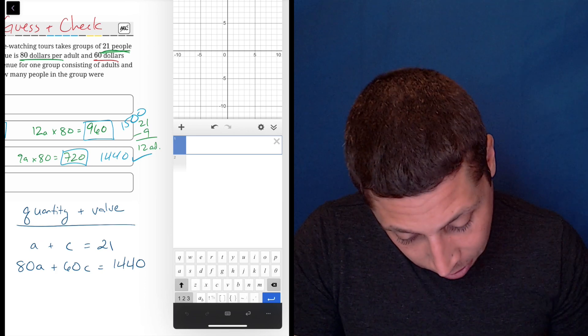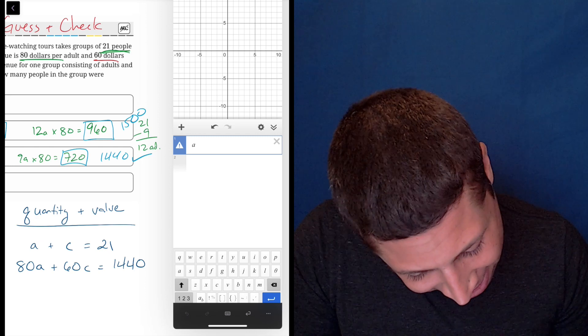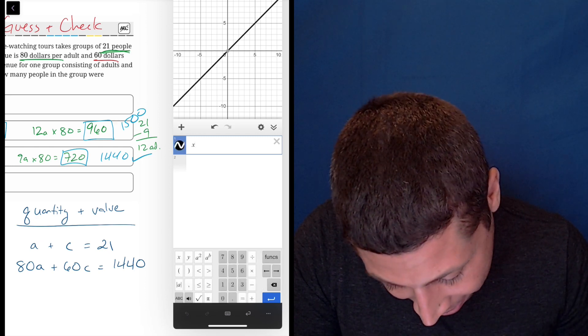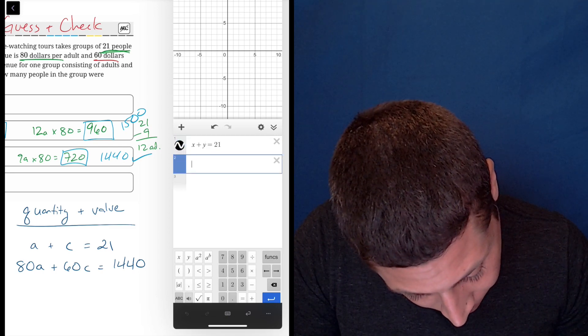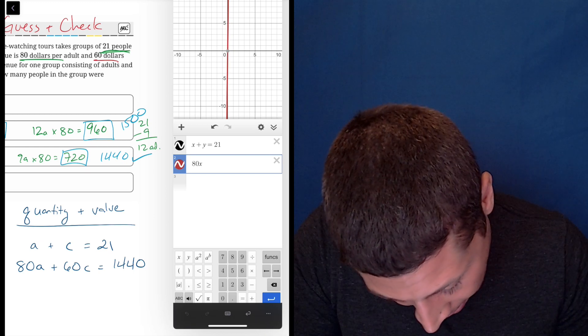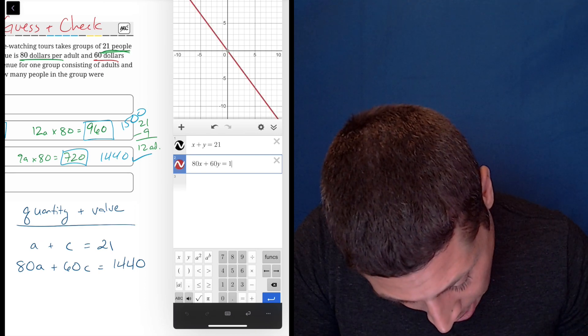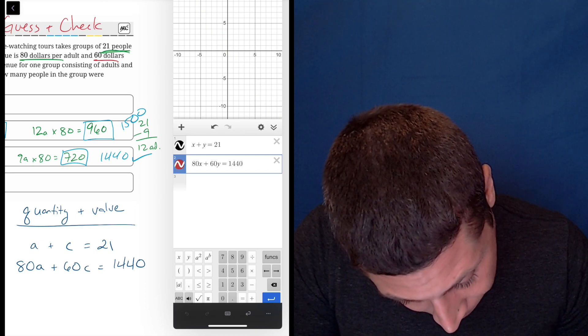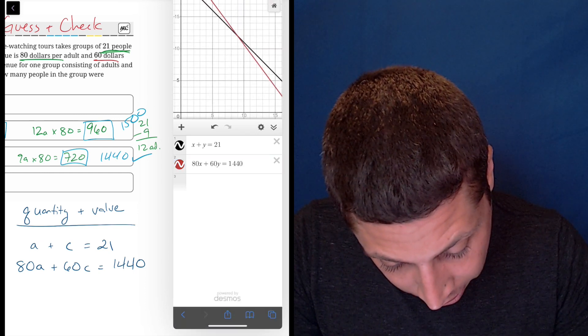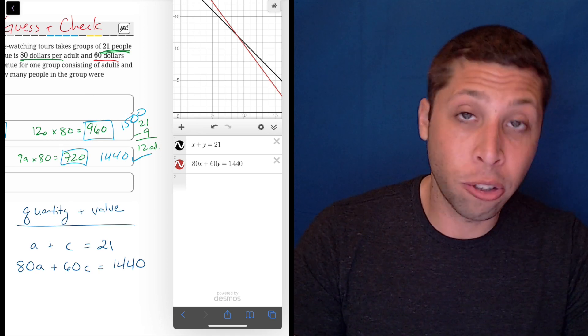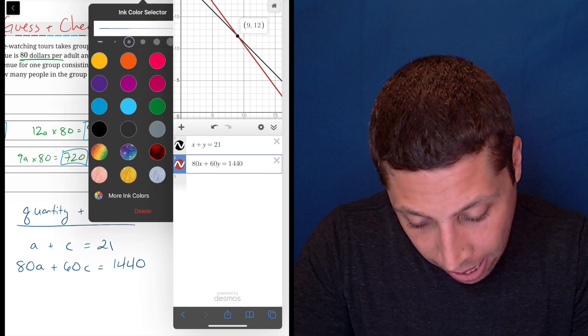So at this point, let's do it. Let's do X plus Y is equal to 21, enter. 80X plus 60Y is equal to 1,440. And you can see if I enter them, everything's gone. So I've got to zoom around here. Now it's always going to be in the first quadrant because it's all positive numbers. And because these are just linear equations, it's going to let me tap and find the answer. So 9, 12 is the answer here.